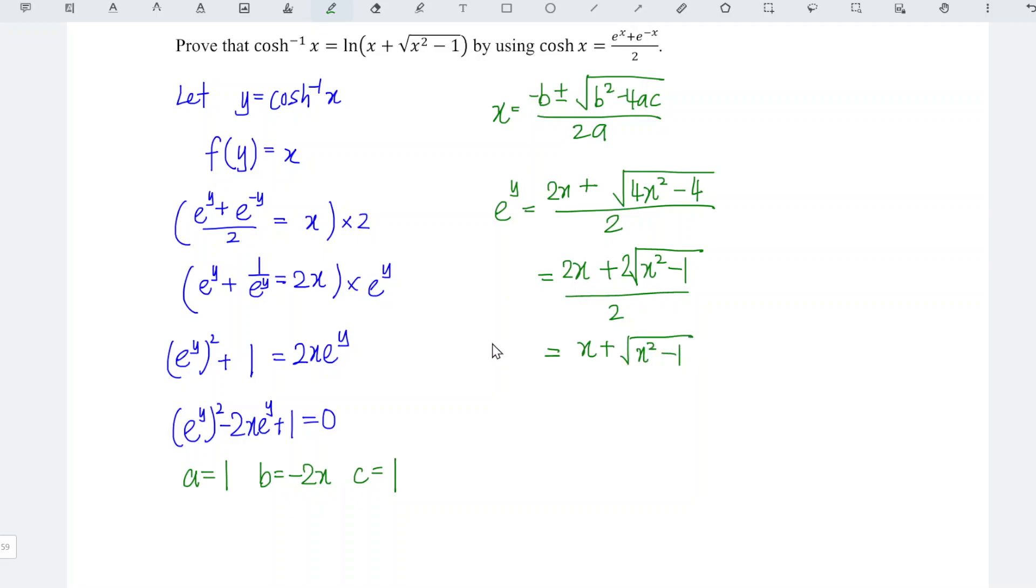And we just have to ln both sides. So we have ln e, power bring down and become y ln e, ln x plus square root of x square minus 1. ln e is equal to 1, and y is what we denoted here, which is cosh inverse x. So cosh inverse x is equal to ln x plus square root of x square minus 1, and hence we're done.